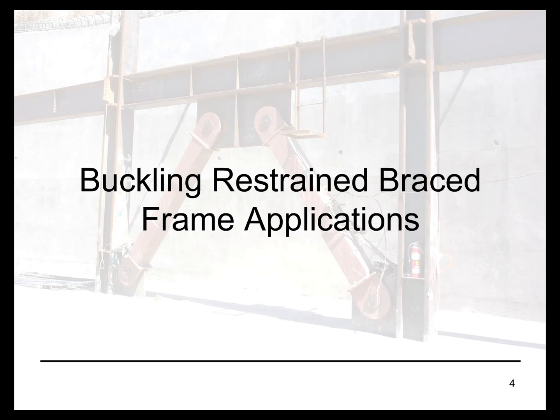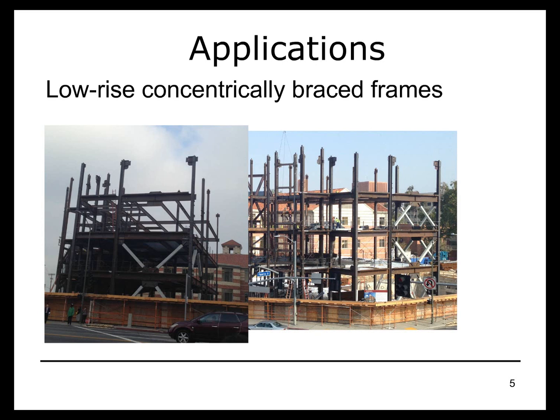Starting with the applications. You've probably seen in many areas of the country buildings under construction with these braces that are typically a different color from the structural steel being erected. This is a building under construction in Southern California. You can see the steel frame and the white braces here — the buckling restrained braces. It's used fairly extensively for reasons I will discuss later in low-rise construction, but that's hardly the only type in which this system is used.